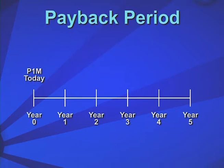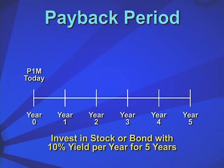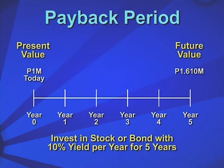However, the entrepreneur knows fully well that 1 million received today is not the same as 1 million received 5 years later. If the entrepreneur received 1 million today and were able to invest this money in a stock or a bond yielding 10% a year, then the money would grow to 1.61 million in the fifth year. Thus, at 10% interest per annum, 1 million today — the present value — would be equivalent to the future value of 1,610,000 pesos 5 years hence.